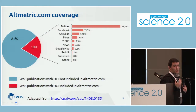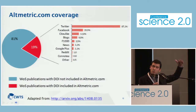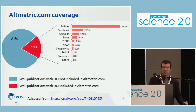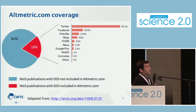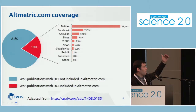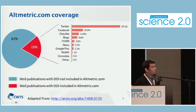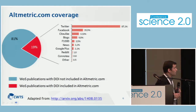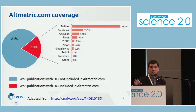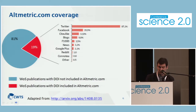Looking at the sources providing these metrics, for publications with Altmetric activity on Altmetric.com, Twitter is the most important source providing impact evidence. Other smaller sources include Facebook, blogs, F1000, news mentions, and Reddit. So when we talk about Altmetrics — excluding Mendeley — we are normally talking about Twitter. That is an important message.